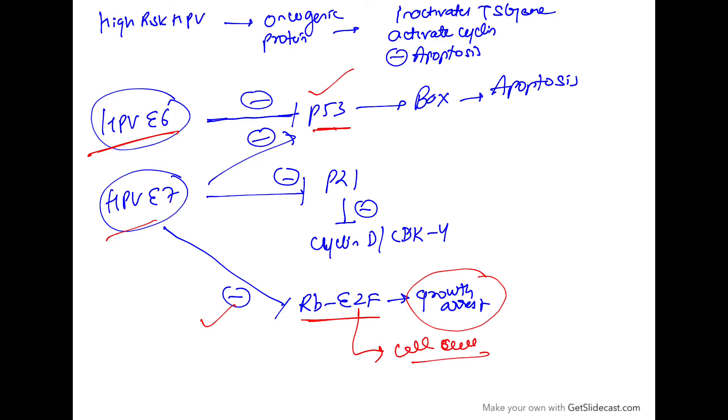Also, E7 inhibits the CDK inhibitors like p21. Normally p21 inhibits cyclin D and CDK4, but now p21 itself is inhibited, therefore cyclin D and CDK4 will be stimulated, so the cell cycle will continue. E7 inhibits the RB-E2F interaction, inhibits the cell cycle inhibitors like p21, and inhibits p53.